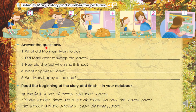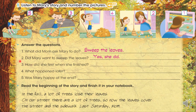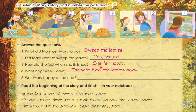Now, answer the questions. Ahora vamos a contestar las preguntas. Number one: What did mom ask Mary to do? Sweep the leaves. Number two: Did Mary want to sweep the leaves? Yes, she did. Number three: How did she feel when she finished? She felt happy. Number four: What happened later? The wind blew the leaves away. And number five: Was Mary happy at the end? No, she wasn't.